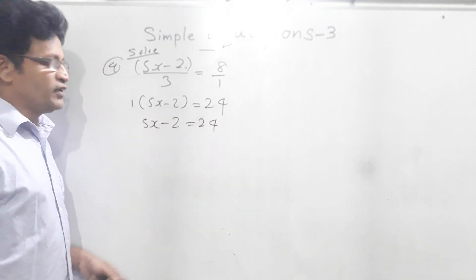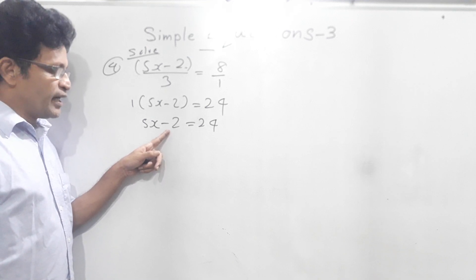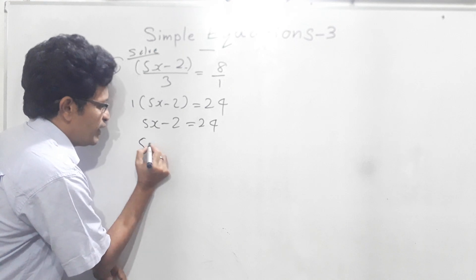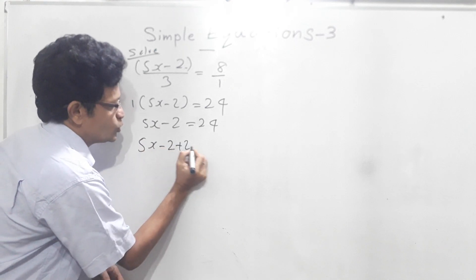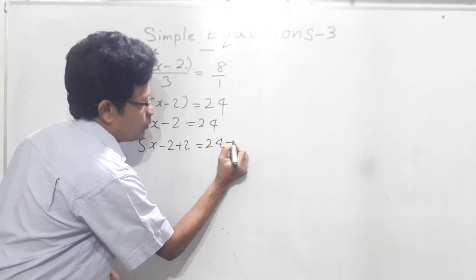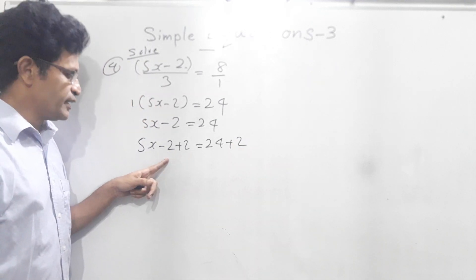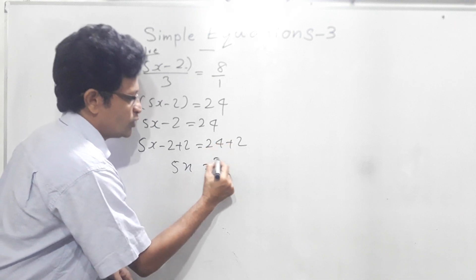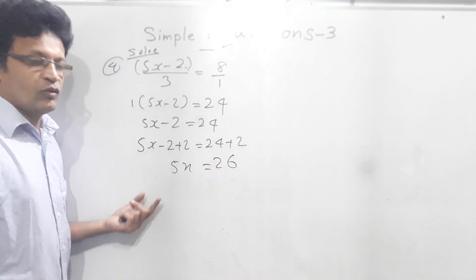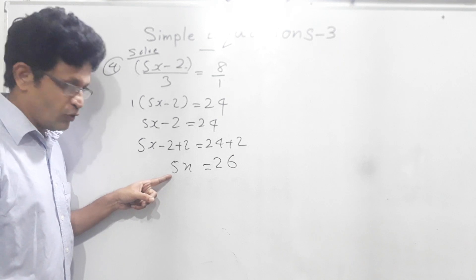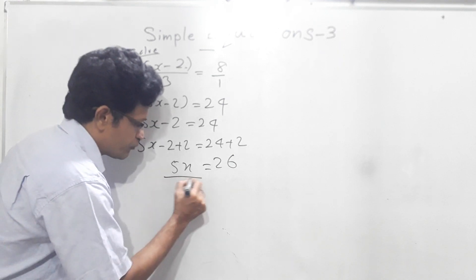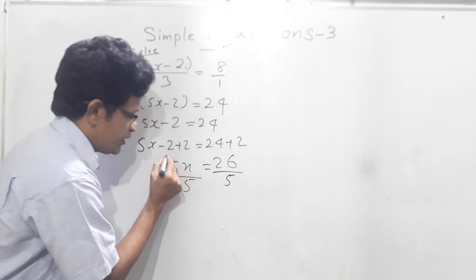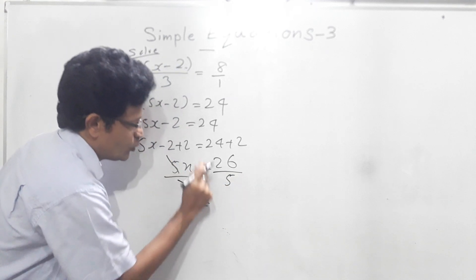Now we have to get rid of this minus 2. To cancel this minus 2, we have to add plus 2 on this side. Then 5x minus 2 plus 2 equals 24 plus 2. Now plus 2 and minus 2 will get cancelled. This side we have 5x. This side 24 plus 2 is equal to 26. Now we have to get rid of this 5; for that we have to divide this side by 5, then this side is divided by 5. 5 and 5 cancel.